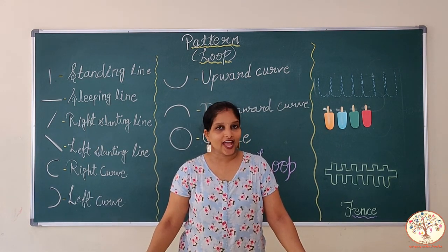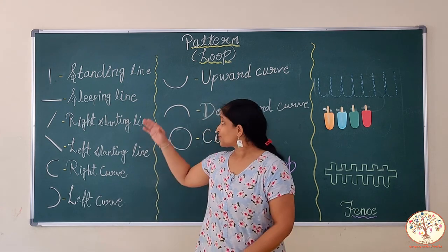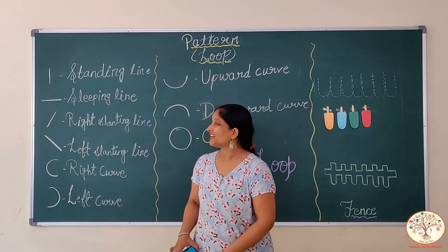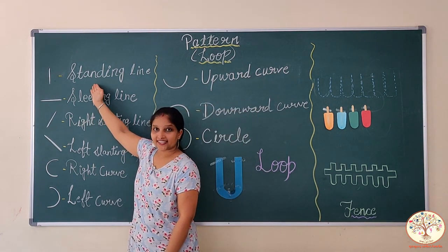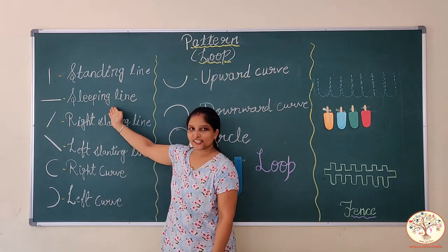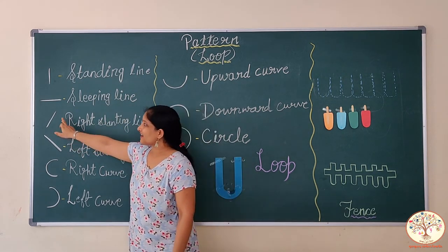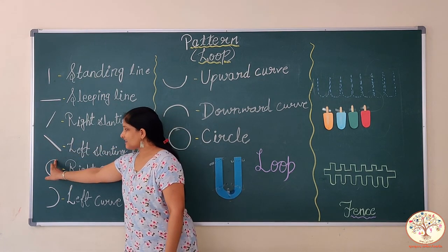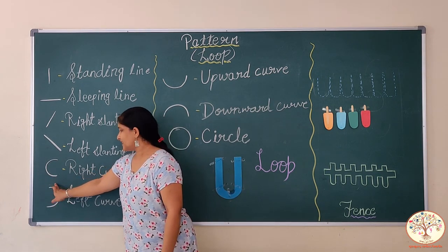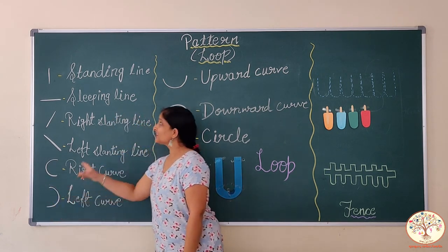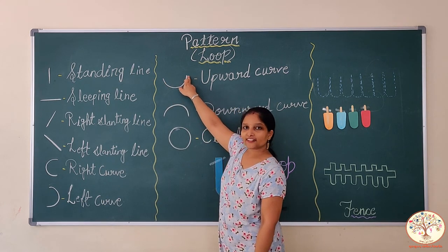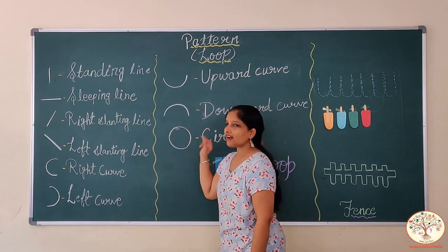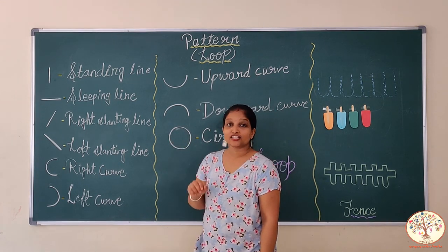Kids, we have learnt in our previous videos so many patterns. These are standing line, sleeping line, right slanting line, left slanting line, right curve, left curve, upward curve, downward curve and circle.